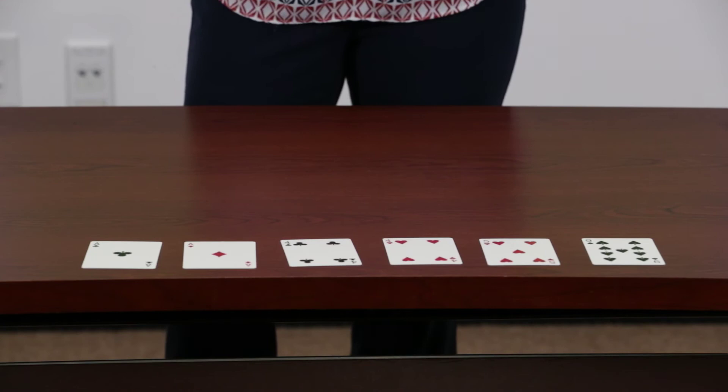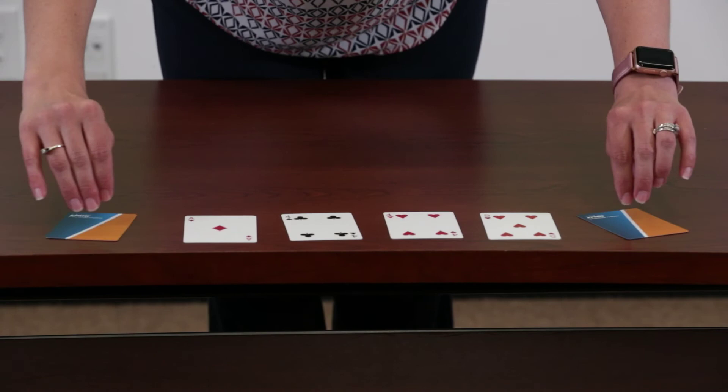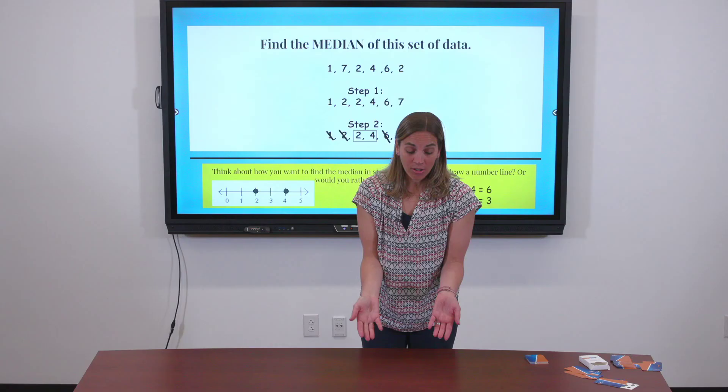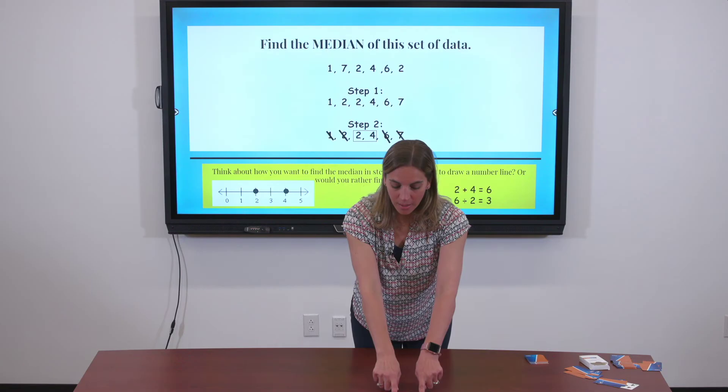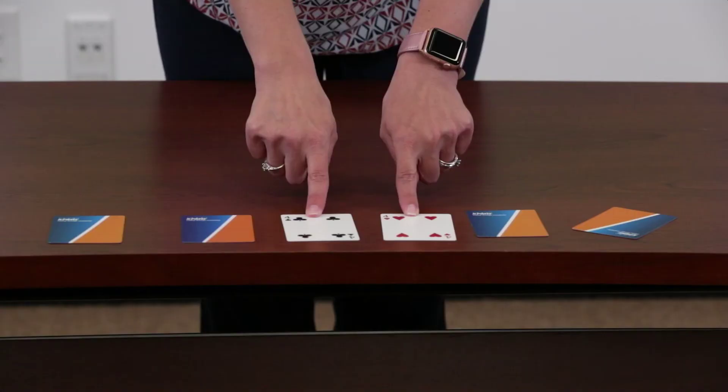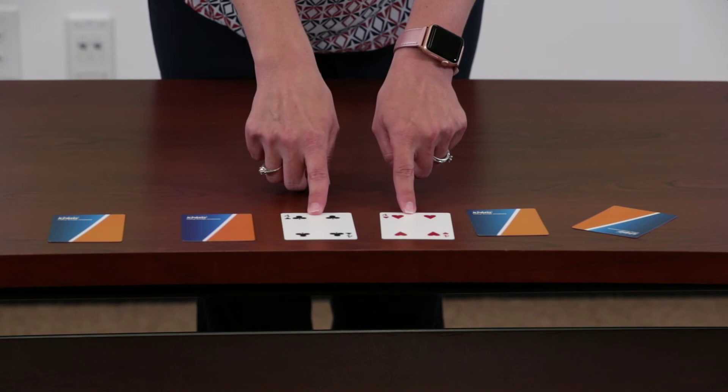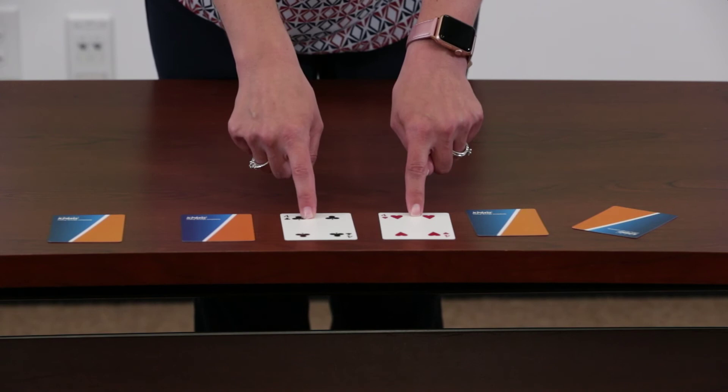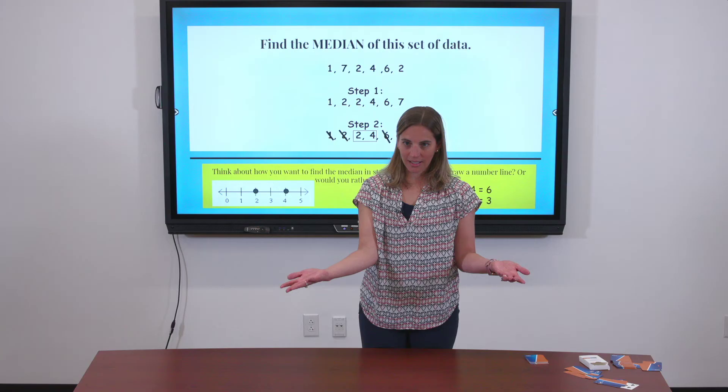We're going to cross off outside pairs until we get to the middle. Look at that happy accident — what do you notice about the two numbers right in the middle? They're the same. No matter what I did here, if I drew these on a number line and plotted four two times, they'd be right on top of each other. And if I add four plus four, that's eight divided by two — which gives you four. So four is going to be my median. I love it when that happens.